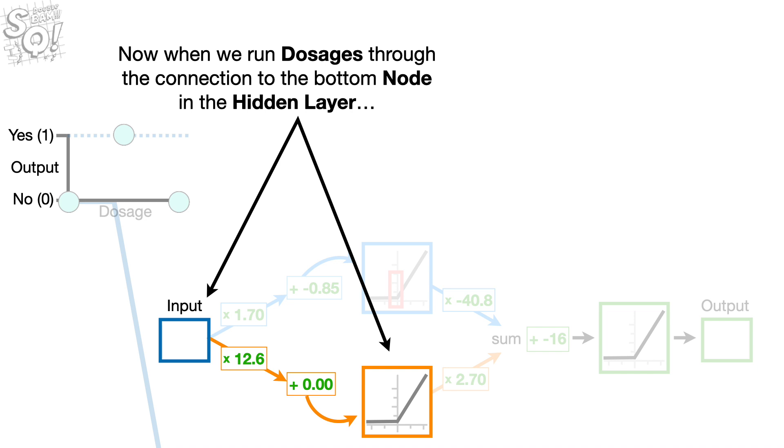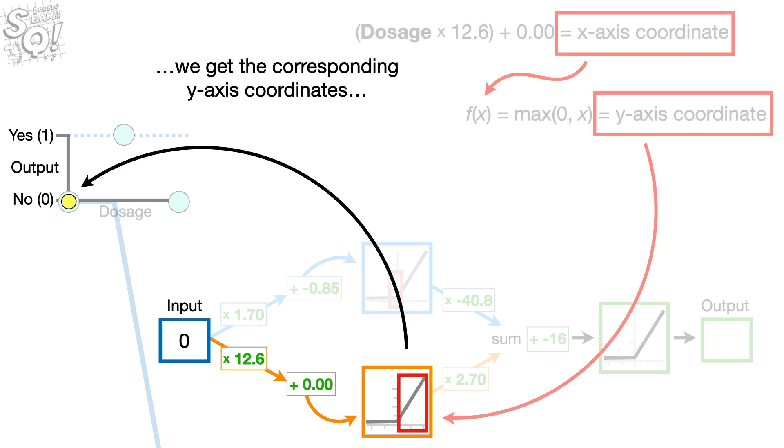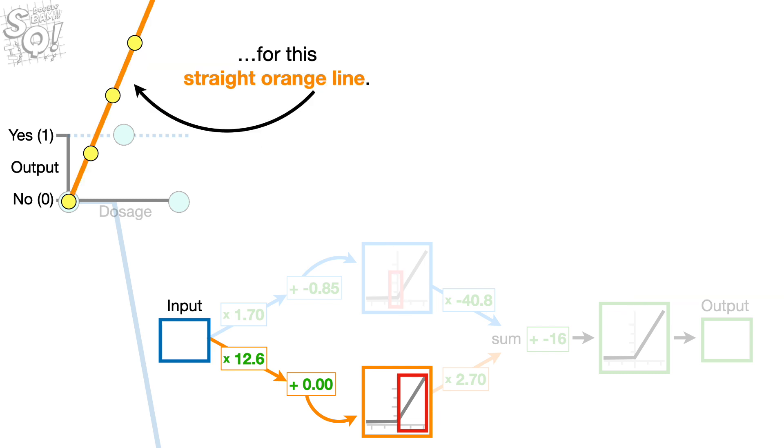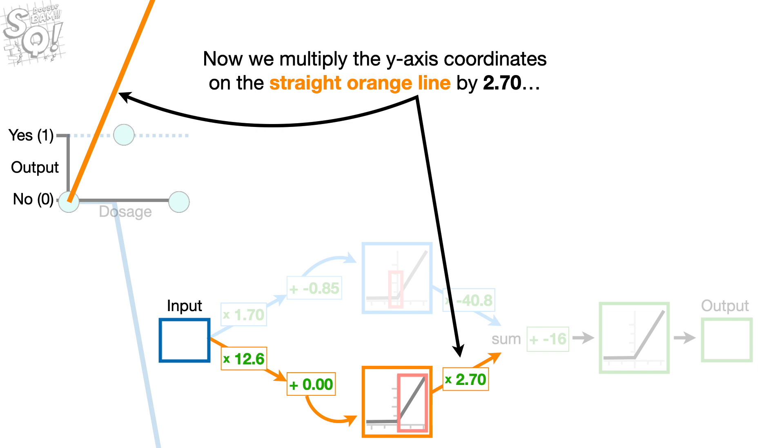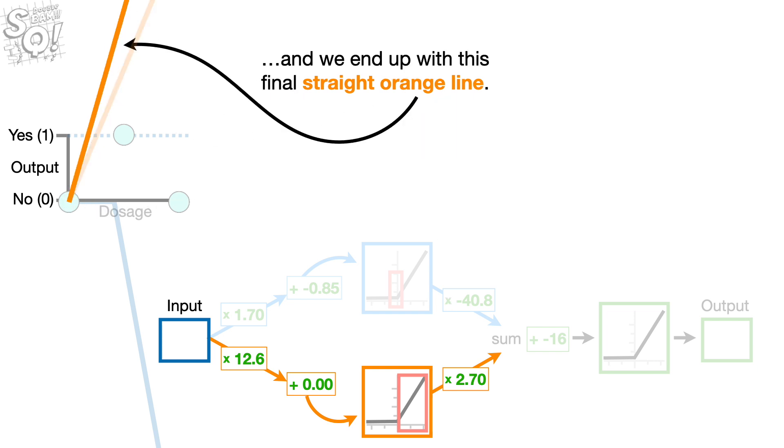Now when we run dosages through the connection to the bottom node in the hidden layer, we get the corresponding y-axis coordinates that go off the screen for this straight orange line. Now we multiply the y-axis coordinates on the straight orange line by 2.70. And we end up with this final straight orange line.